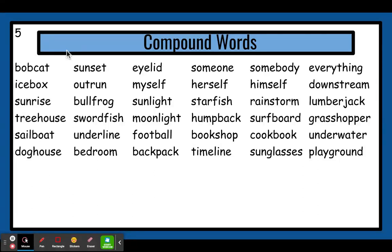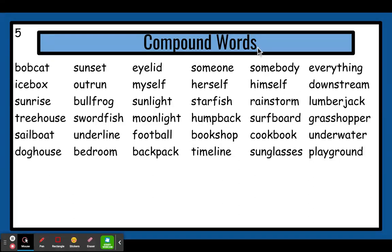Next word, we have my and self. Each of those two words — we have a word, my, and another word, self. Put them together, we have myself. Next part: her and self. Put them together, we have herself. Next word: him, self. Himself. So those three go together, don't they? Myself. Herself. Himself.